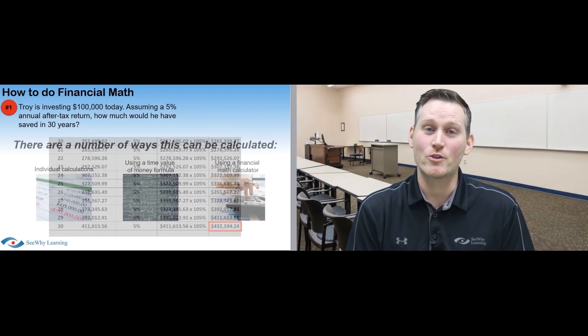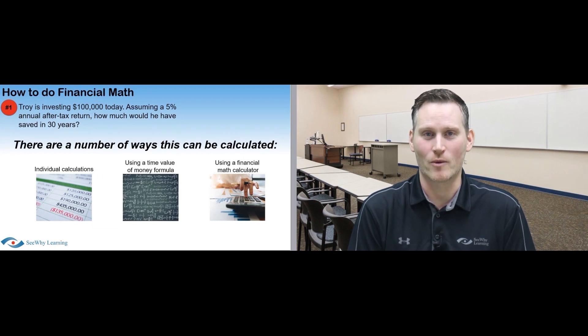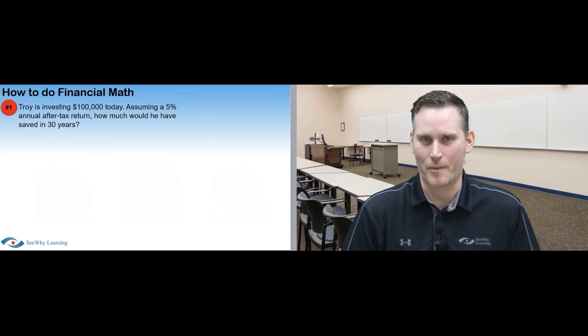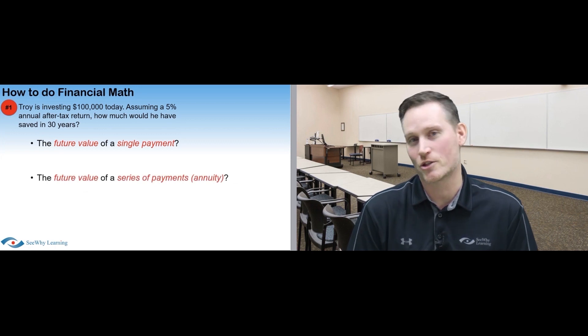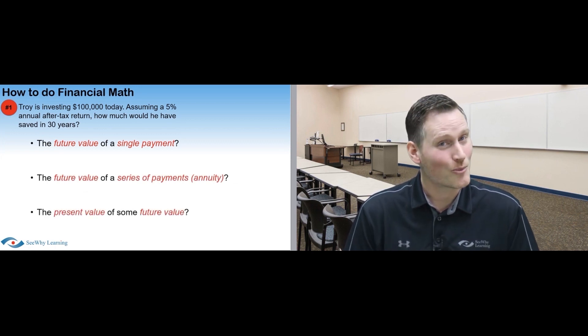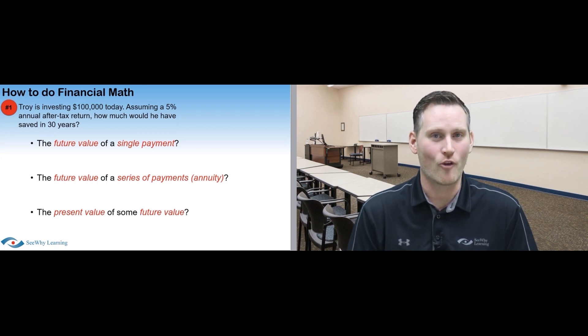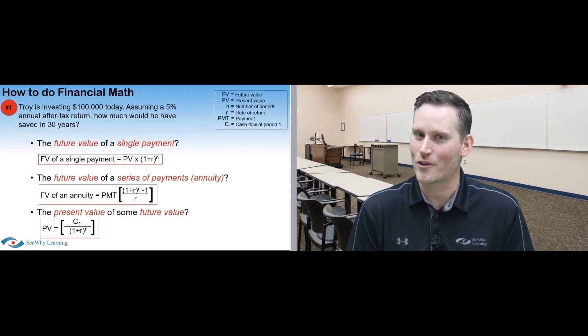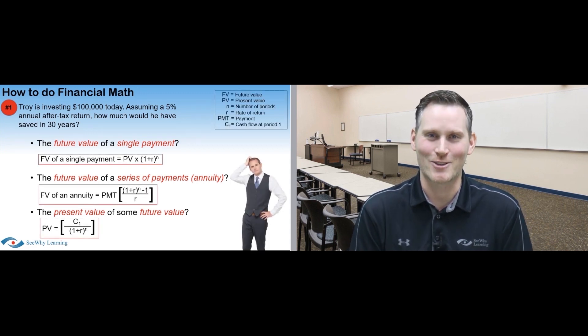Another way to tackle this is to use a time value of money formula, which would be much quicker, provided you've memorized the formulas and know which one to use. For example, are you being asked for the future value of a single payment, or the future value of a series of payments, which is referred to as an annuity, or the present value of some future value? As you can probably tell, you're going to use a different formula depending on what you're being asked. If you look to the side of me, you'll see these formulas. And I'm sure many of you are thinking, please tell me there's an easier way.